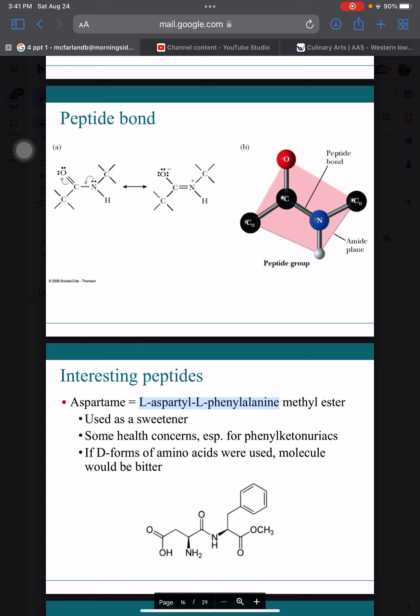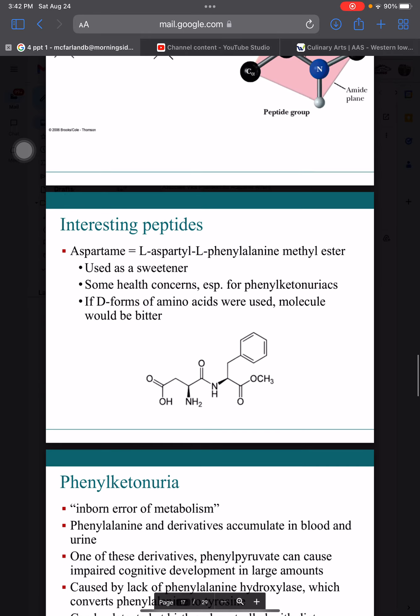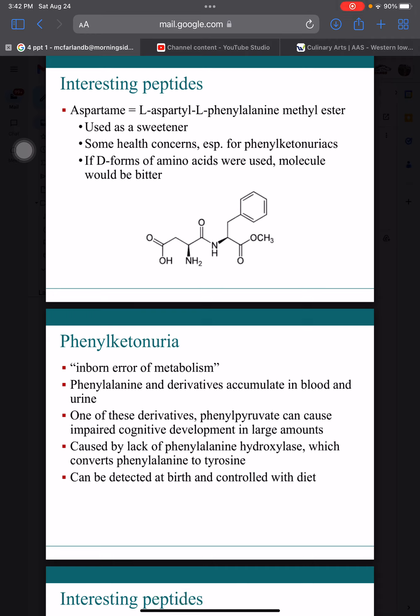You've probably heard aspartame brought up regarding health concerns — many people fear it's a cancer-causing agent, but that is largely overblown. Technically it could give you cancer, but you'd have to consume an ungodly amount of it. However, there are certain people for whom this would actually be quite dangerous: those with phenylketonuria. Phenylketonuria, or PKU, is a genetic disease — an inborn error of metabolism — where some genetic mutation causes something in a normal metabolic pathway to get disrupted.